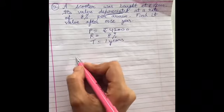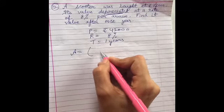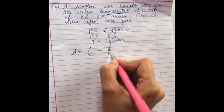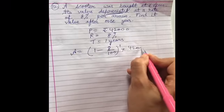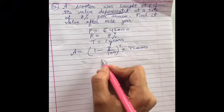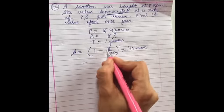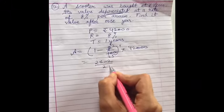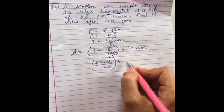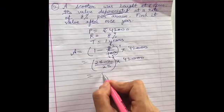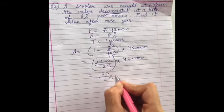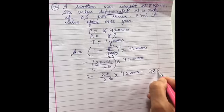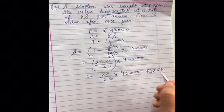So the value is decreasing. That means we have to find out the depreciated value. So it will be (1 - 8/100) raised to power 1 multiplied by 42,000. So it will be 4, 2, 8, 25. So 25 minus 2/25 when you take the LCM is 42,000, which is equal to 23/25 multiplied by 42,000. When you will solve it, you will get 38,640 rupees. That is your final answer.